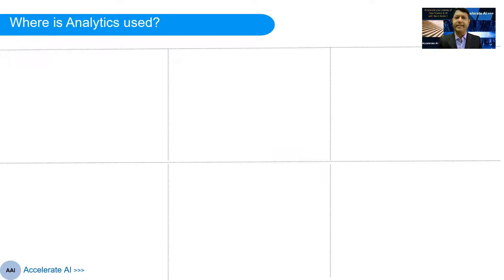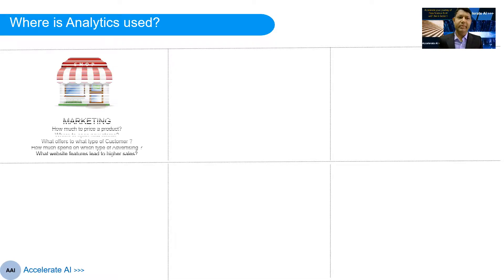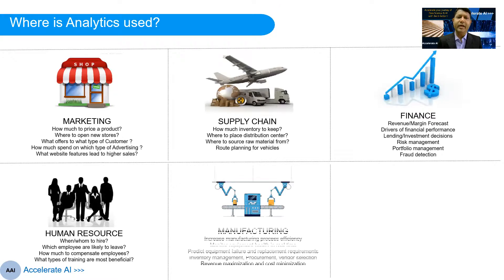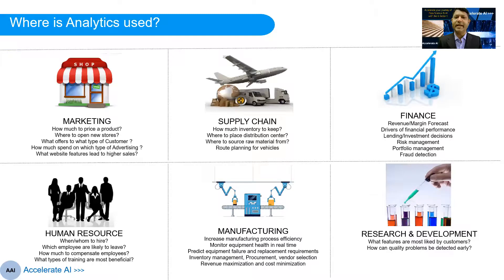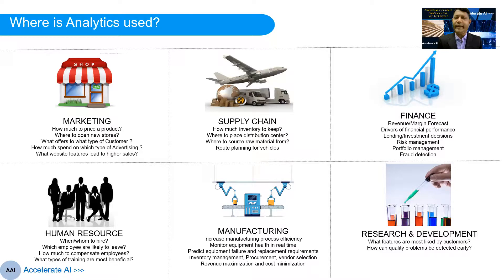We've talked about what analytics is and the different types. Now let's look at where analytics is used in the industry today. In most functions and most industries, analytics has been heavily used over the last 15 to 20 years as technology has become more efficient and cheaper. Marketing was one of the earliest business functions to adopt analytics in a big way — answering questions like how much to price a product, where to open new stores, what offers to give particular customers, or how much to spend on a particular advertising channel.